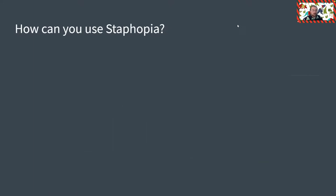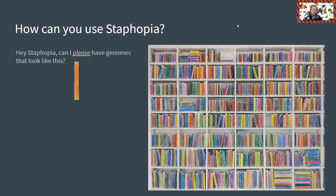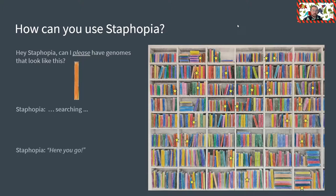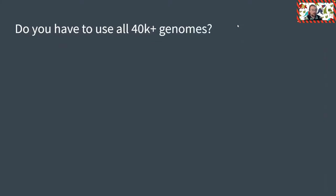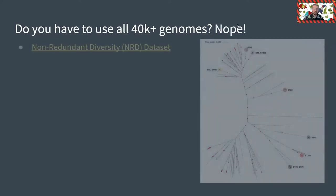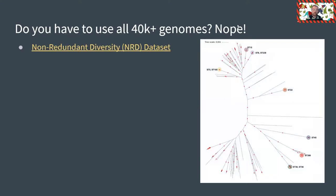Now, how can you use Staphopia? Let's say you go to Staphopia and ask, can I please have a genome that looks like this — this orange book-looking genome? Staphopia would begin searching and, in a very short time, bring you a list of samples that match your request, denoted by little stars. Now, what if you aren't quite sure what you need, but wanted a good representation of the Staph population and didn't want to use all 40,000 genomes? Do you have to use all 40,000? The answer is no. We created the non-redundant diversity dataset, or as I like to call it, the NERD set.